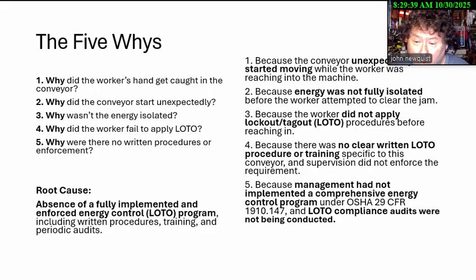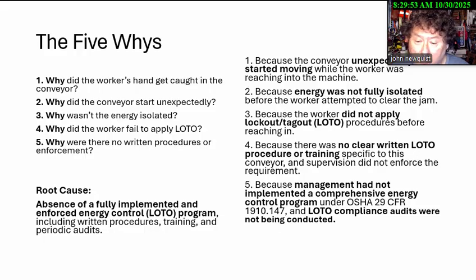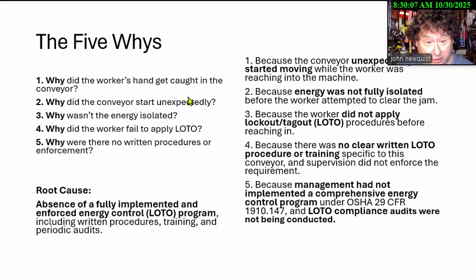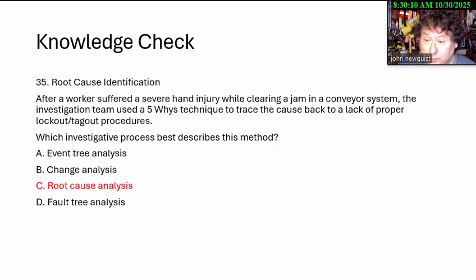Why were there no written procedures? Because management had not developed a comprehensive energy control program under 29 CFR 1910.147, and lockout compliance audits were never conducted. So the root cause is the absence of a fully enforced lockout program, including procedures, training, and audits. This is the thought process during a lockout inspection for OSHA — it's a nice thing to have. So the answer was root cause analysis — I would drop the word 'root cause identification.'